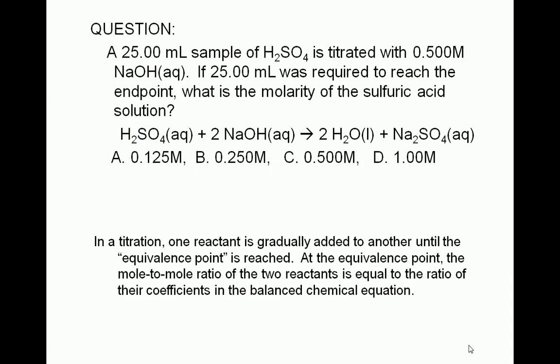In a titration, one reactant is gradually added to another until the equivalence point is reached. At the equivalence point, the mole-to-mole ratio of the two reactants is equal to the ratio of their coefficients in the balanced chemical equation.